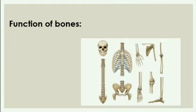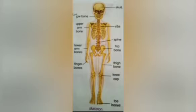Now we will discuss about the function of bones. Bones make up the framework of your body and that is called skeleton. Dear kids, this is the picture of a skeleton that is made up of bones like skull, ribs, spine, hip bone, thigh bone, kneecap, toe bones, jaw bone, upper arm bone, lower arm bones, and finger bones.